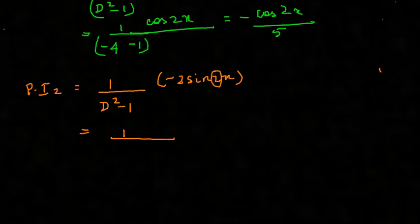Minus a² is nothing but 2 is a. Therefore, minus a² becomes minus into a², which is 4. Again, minus 1 into minus 2 into sin 2x.